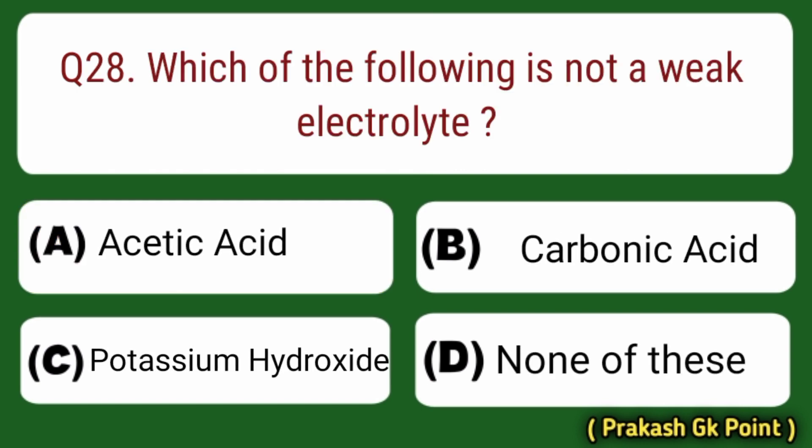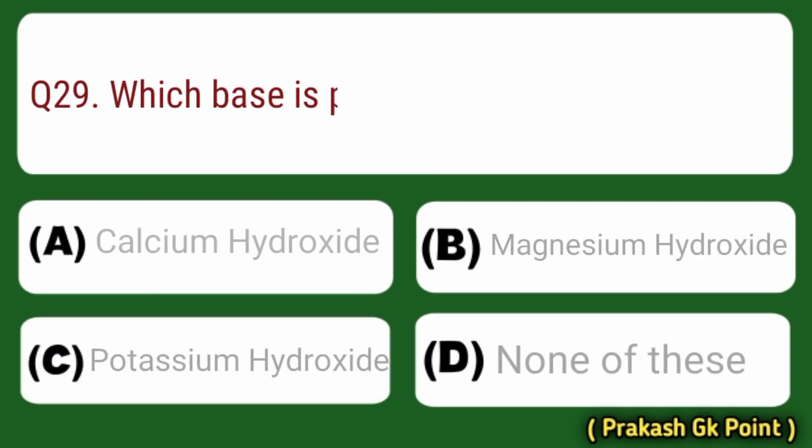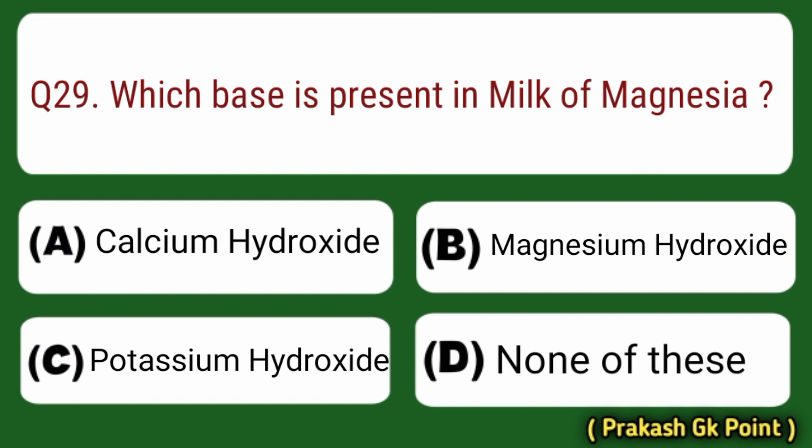Next question: which one of the following is not a weak electrolyte? Answer: Option C — Potassium Hydroxide.